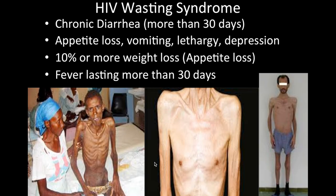The wasting syndrome involves extreme weight loss due to the AIDS condition — chronic diarrhea for more than 30 days, loss of appetite, vomiting, weakness, lethargy, depression, loss of more than 10% of body weight, and fever for over 30 days. As you can see in the picture, it's a very sad condition where the patient can become severely emaciated and extremely weak.